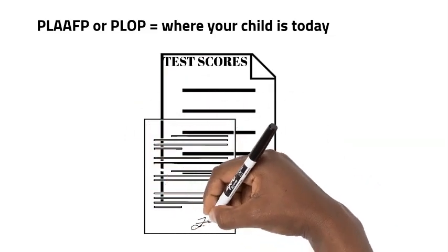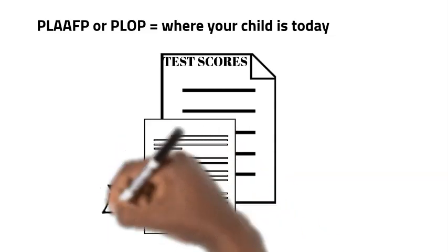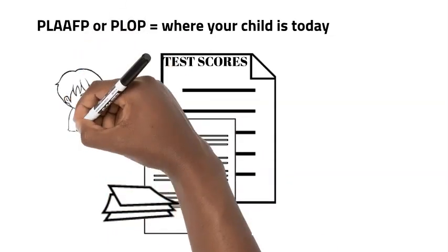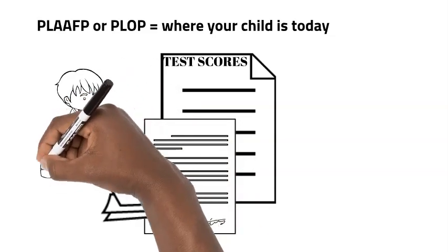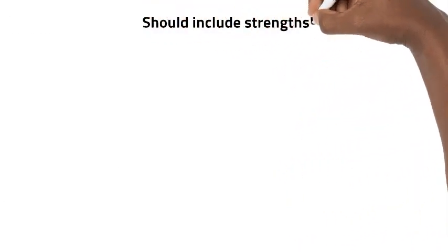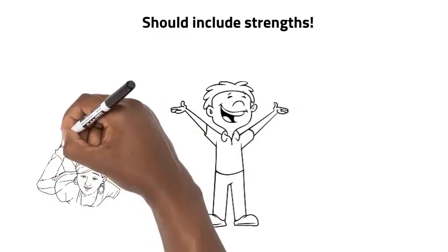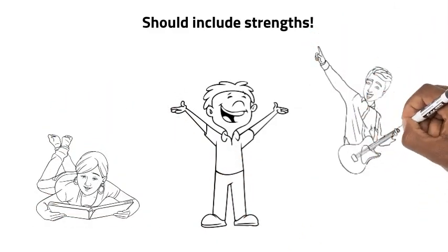It may include test information, teacher observations, parent input, and other forms of information. It basically describes where your child is today, what their needs are, and any concerns that need to be addressed. This area should also include a statement of your child's strengths. What are they good at? What are they interested in? What are they excited about at school?